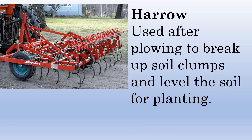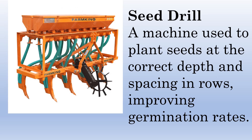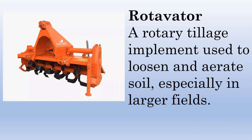Harrow — used after plowing to break up soil clumps and level the soil for planting. Cultivator — used to stir and pulverize the soil, remove weeds, and prepare the ground for planting. Seed drill — a machine used to plant seeds at the correct depth and spacing in rows, improving germination rates. Rotivator — a rotary tillage implement used to loosen and aerate soil, especially in larger fields.